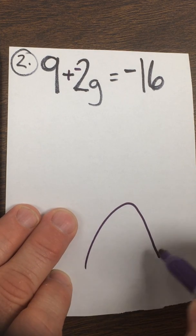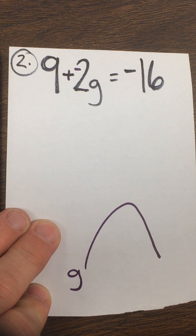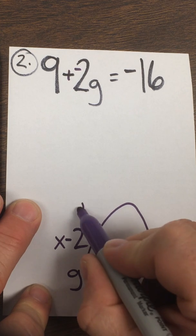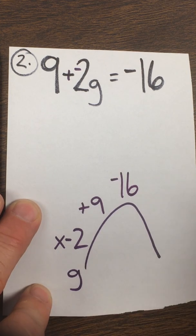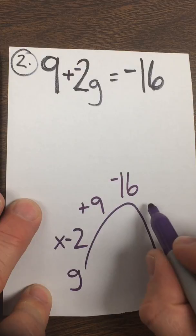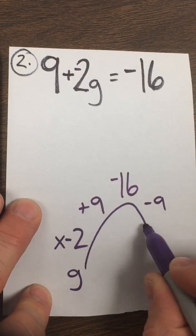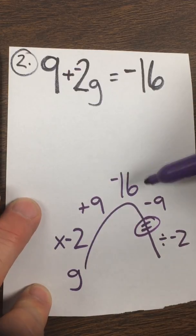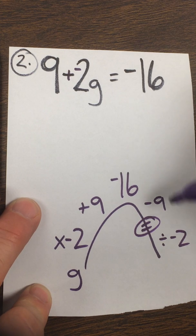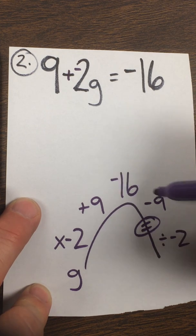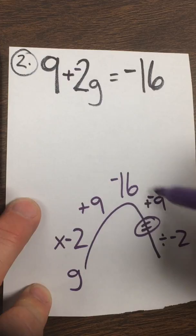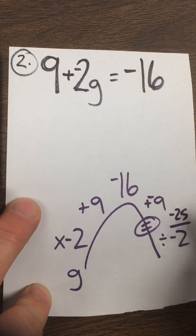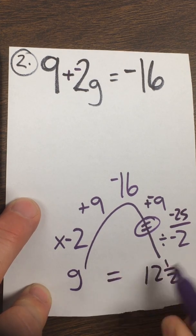Rainbow would look like this. For those of you that are struggling, start with the variable. Ask yourself what was done first. Since they were doing order of operations, they would have multiplied by negative 2, then they would have added 9, and that built the number up to negative 16. So we're going to undo that by subtracting 9. If you're doing a calculator, you need to hit equals right here, and then divide by negative 2. A negative divided by a negative is a positive, and so our answer is 12 and one half.